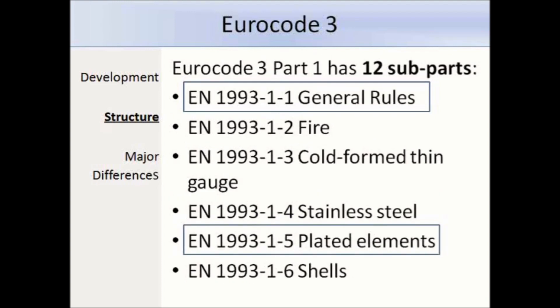EN 1993 Part 1 is broken up into 12 further sub-parts. We have general rules, which we will be most interested in, as well as sub-parts covering cold-formed sections, fire design, stainless steel, plated elements and shells. We might use 1993 Part 1.5 to check if we need a stiffener under a point load — so although it's called plated elements, it covers things like the resistance of webs.